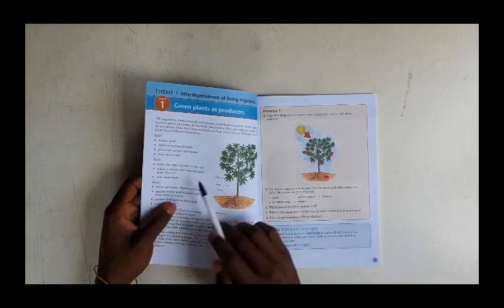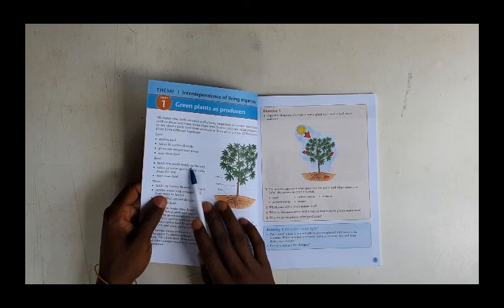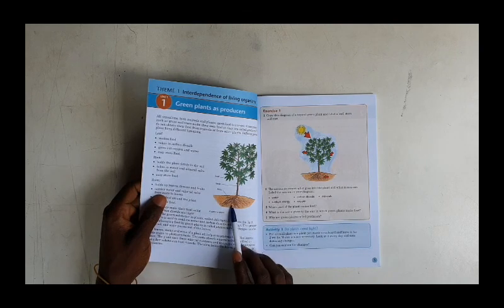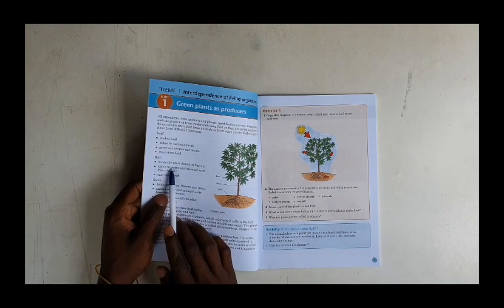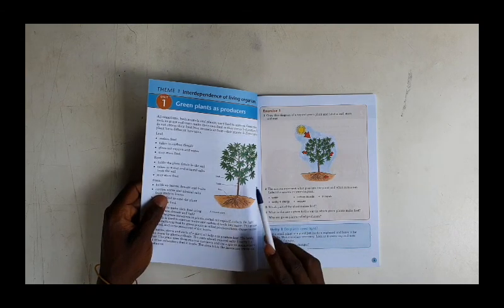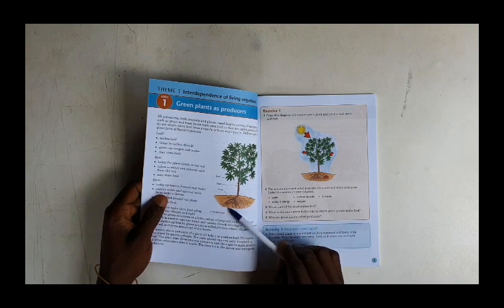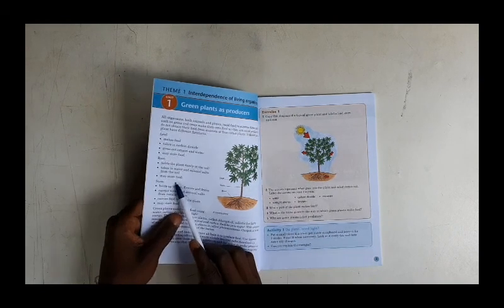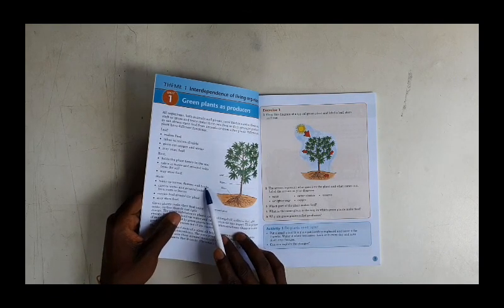The leaf stores food. Roots - the roots hold the plant firmly to the soil. As you can see in the picture, here is the roots. It holds in water and mineral salts from the soil. The plant gets the water and minerals from soil through the roots. It may also store food.